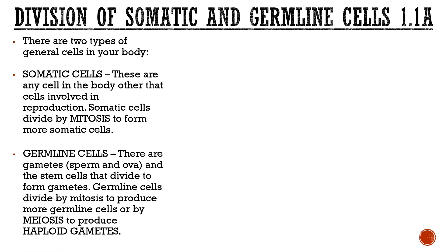The other type of cell is a germline cell. These are known as your gametes — your sperm and your ova — and the stem cells that divide to form these gametes. Germline cells divide by mitosis originally and then produce more germline cells by meiosis to produce haploid gametes. Haploid means one copy of every chromosome, where a somatic cell would have two copies of every chromosome.